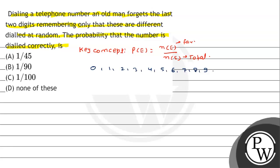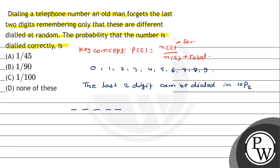The last two digits can be dialed in 10P2 ways. यहां पर last के जो दो digits होंगे वो 10P2 तरीके से dial हो सकते हैं, because इसमें से हम कोई भी दो digits ले सकते हैं। उदाहरण के लिए, कोई telephone number है 1 2 3 4 5 6 7 8 ... 10 digit का, तो इन दो positions को भरने का तरीका।